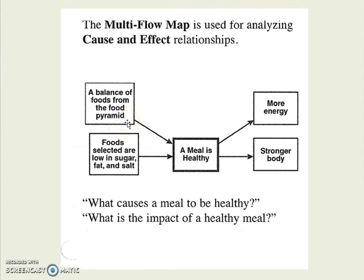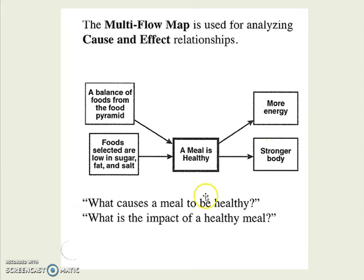A multi-flow map is for cause and effect. So a balance of food from the food pyramid and food selected low in sugar causes a meal to be healthy, and the effect of having a healthy meal is you have more energy, a stronger body, and maybe more courage to get in a bathing suit.